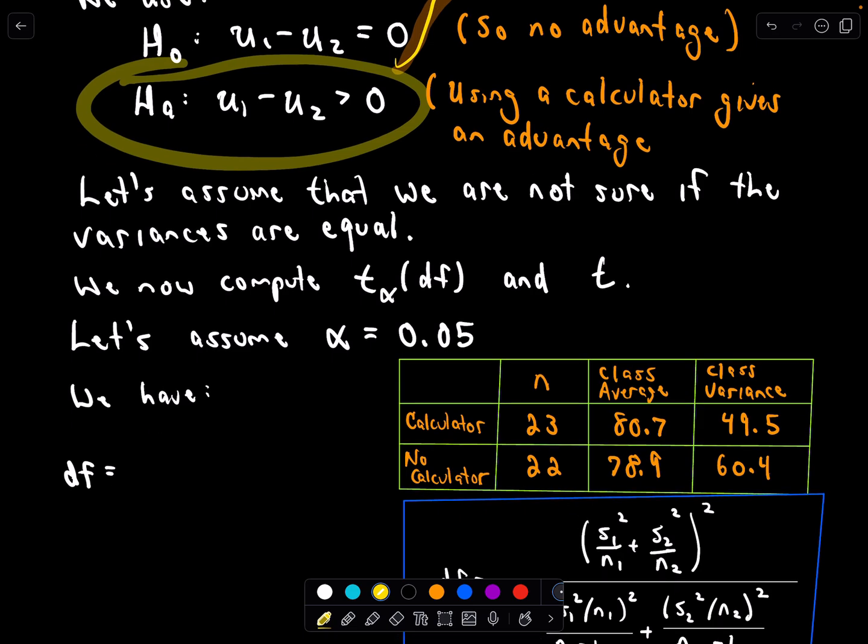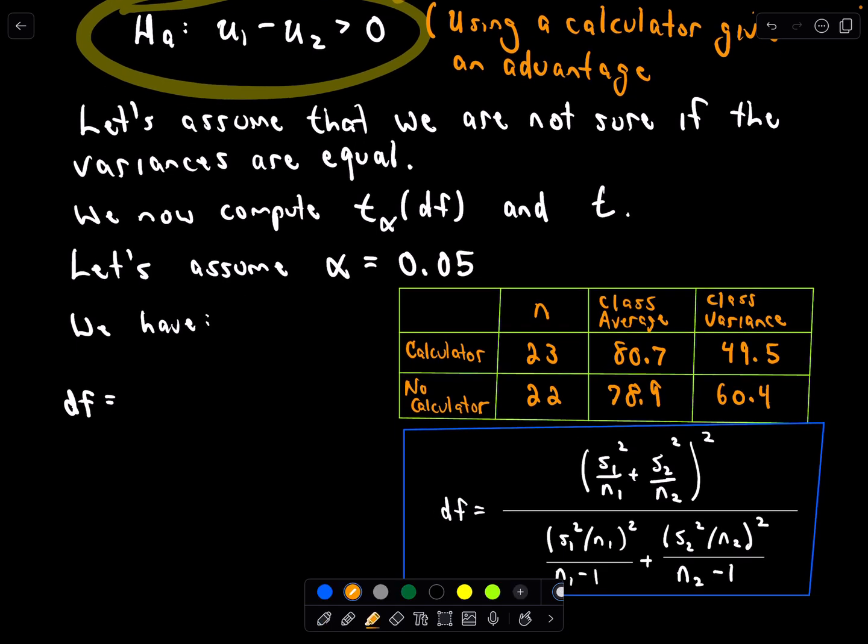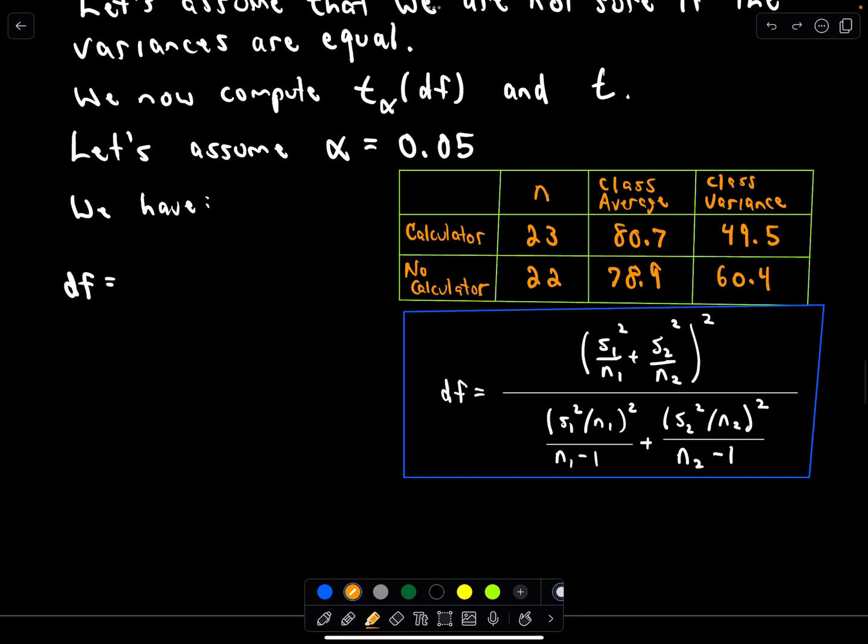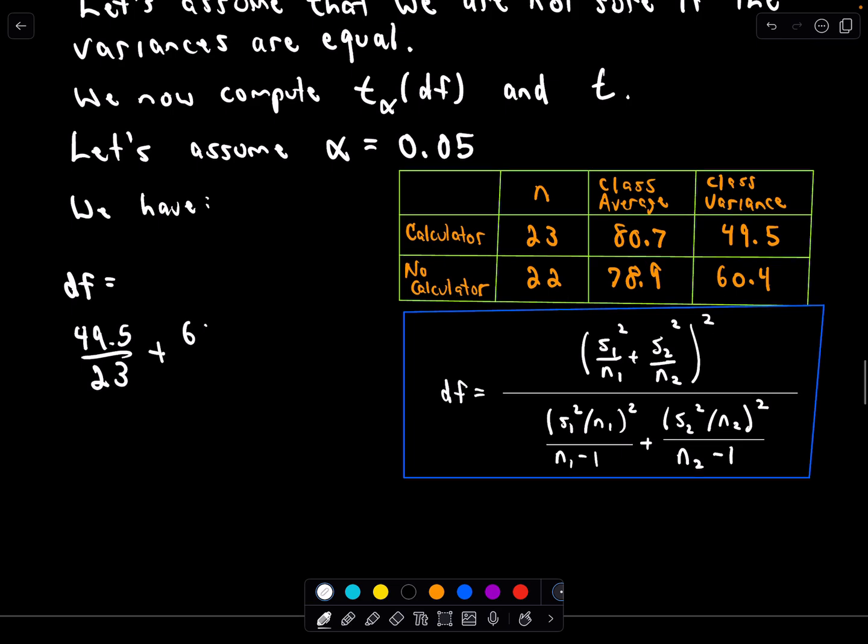All we're going to do now is just compute this value using our degrees of freedom, our test statistic, and we're going to compare them. So here's our formula for the degrees of freedom and there's our table that we collected. So again I'll fill this in just to illustrate. To drop all of these values in I would have 49.5 over 23 plus 60.4 over 22. So that's going to be the numerator. So I've now got the values for the numerator and then again it's just dropping all those values in.